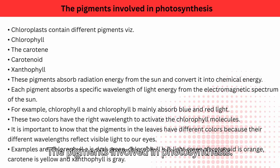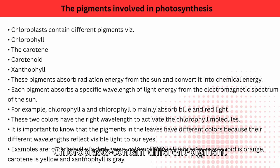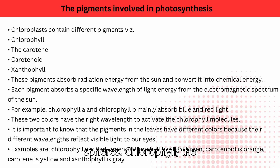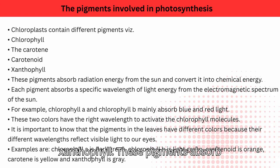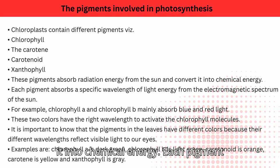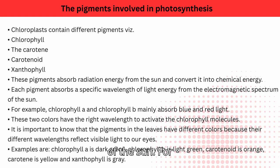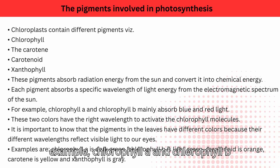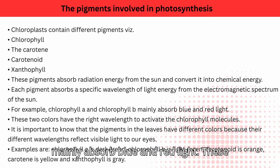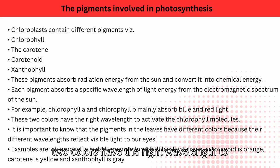The pigments involved in photosynthesis: chloroplasts contain different pigments — chlorophyll, carotene, carotenoid, and xanthophyll. These pigments absorb radiation energy from the sun and convert it into chemical energy. Each pigment absorbs a specific wavelength of light energy from the electromagnetic spectrum of the sun. Chlorophyll A and chlorophyll B mainly absorb blue and red light, as these two colors have the right wavelength to activate the chlorophyll molecules.